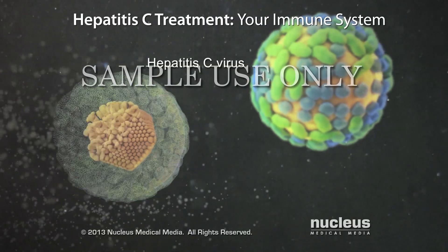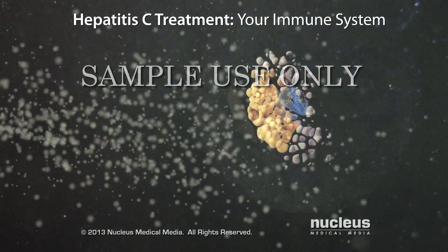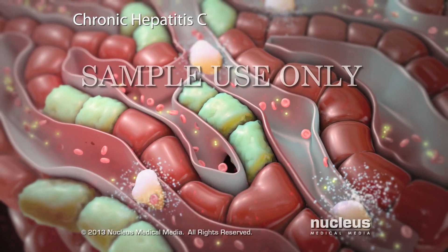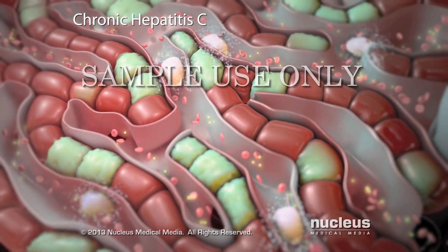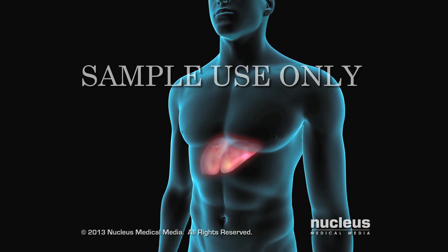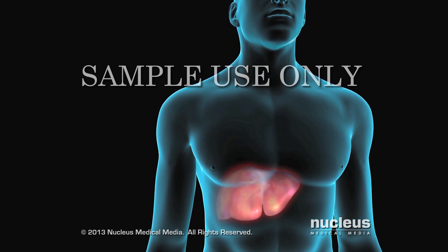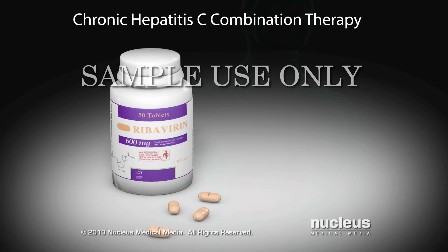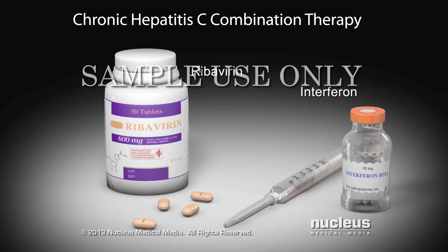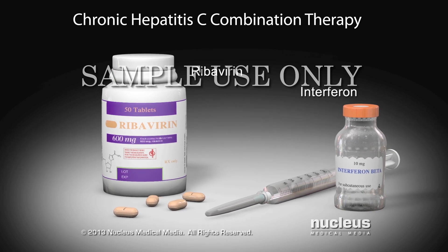If you have hepatitis C, your immune system alone may destroy all of the hepatitis C viruses in your body. However, most people infected with the virus develop chronic hepatitis C, a condition in which your immune system is not able to destroy all of the viruses in your body after six months. If you have chronic hepatitis C and your immune system can't get rid of the virus completely, your doctor may prescribe a combination therapy consisting of an antiviral medication called ribavirin and injections of interferon, a medication that strengthens your immune system. These drugs are most effective against hepatitis C when taken together.